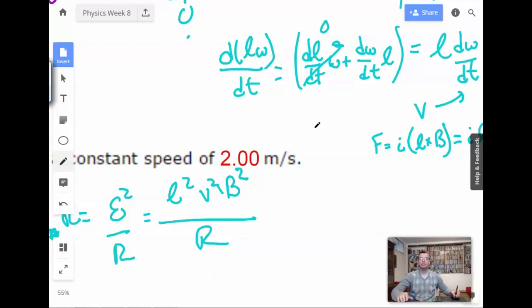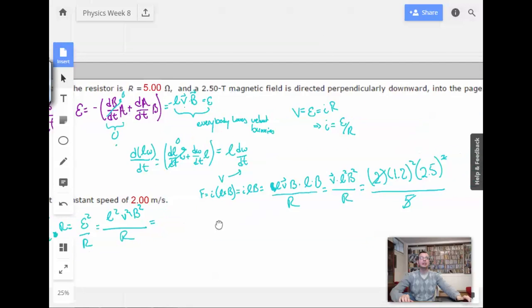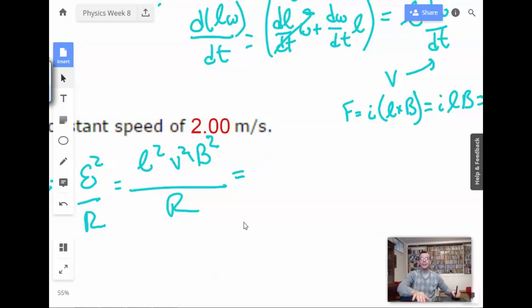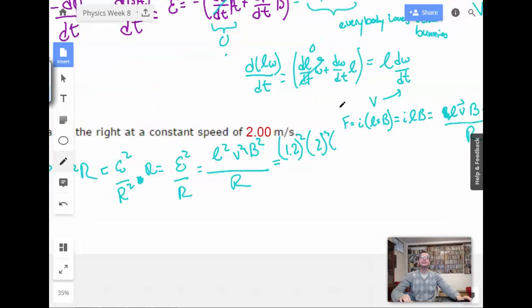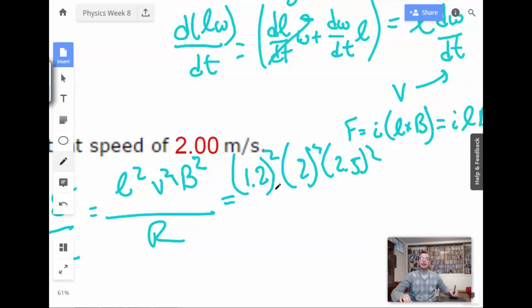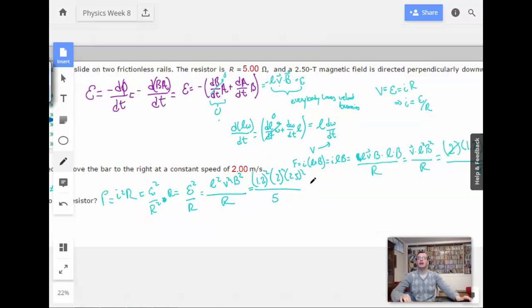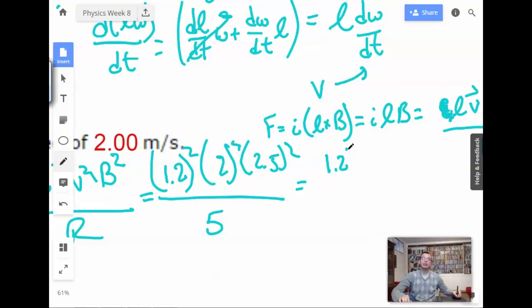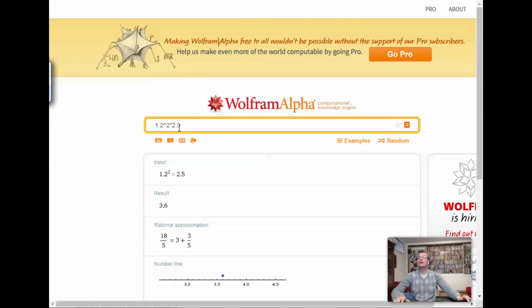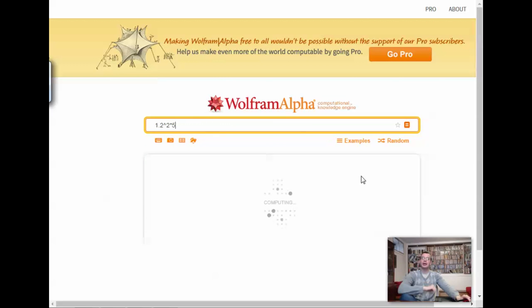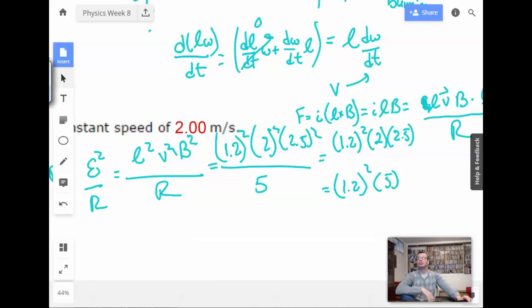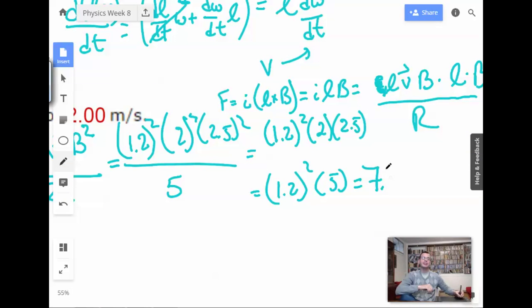Okay. I'll believe that. So this is going to be, look at all our numbers again. Length, 1.2. So we have 1.2 squared. 1.2 squared. Velocity, which is 2 squared. Magnetic field, which is 2.5 squared over resistor, which is 5. I'm going to do the trick again by getting rid of 2 squared times 2 times 2.5. And then I'm going to get 1.2 squared times 5. And then, 2 squared times 5. 7.2. 7.2 watts.